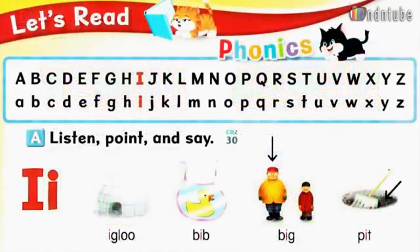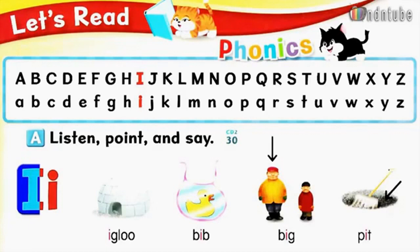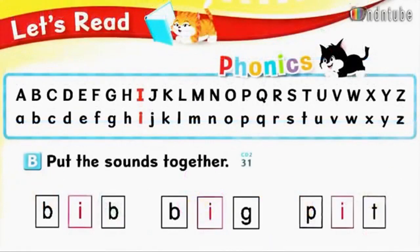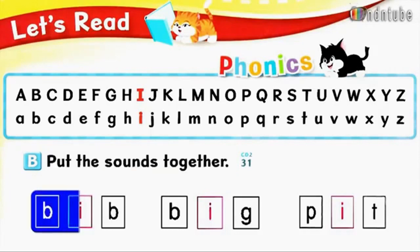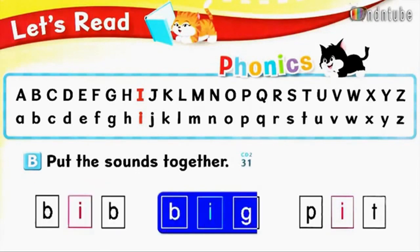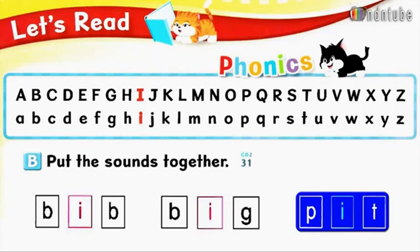Page 54. Let's read. A. Listen, point, and say. I — igloo, bib, big, pit. Page 54. B. Put the sounds together. B-I-B — bib. B-I-G — big. P-I-T — pit.